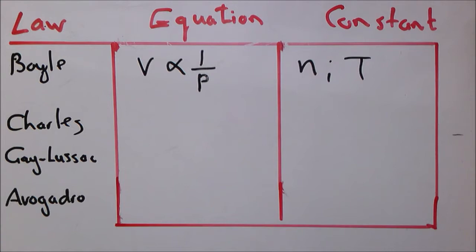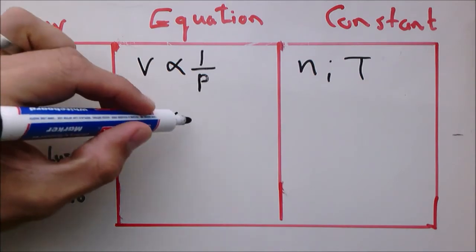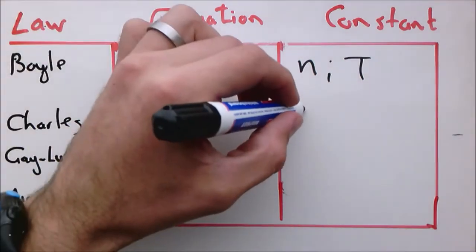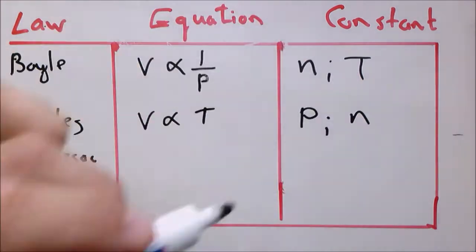In Charles' law, we looked at the relationship between volume and temperature and saw that volume is directly proportional to temperature. We did those experiments when we had a constant pressure and constant amount of moles.